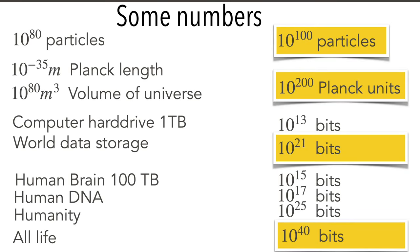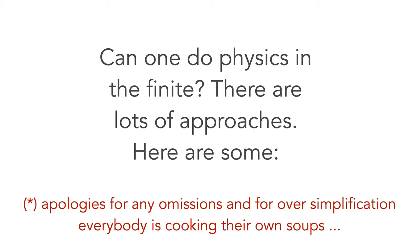So how finite is finite? If you look at the number of particles, 10 to the 80 particles, we can say there's less than 10 to the 100 particles, less than 10 to the 200 Planck units in the universe. The smallest unit is 10 to the minus 35 meters, and 10 to the 18 meters cubed is the volume of the universe. The amount of information we can store: the world has maybe 10 to the 21 bits currently. The brain has a finite amount of information. All life, altogether, has maybe 10 to the 40 bits. So the numbers are finite. It's natural to ask whether we can do physics in the finite.